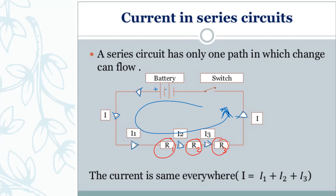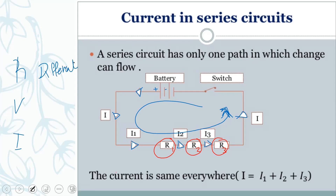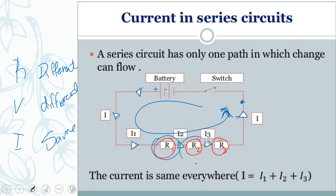In the series circuit, we have R, V, and I everywhere. The resistances inside the circuit are different and the voltages are also different. But the current will be the same — the current at this point is the same as the current at this point, the same as the current for R1, R2, and R3.